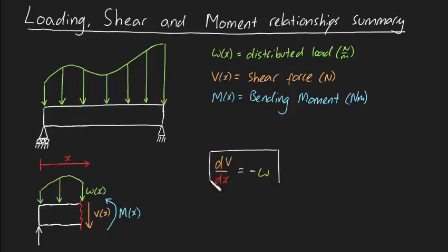dv dx is equal to minus w, and dm dx is equal to v.